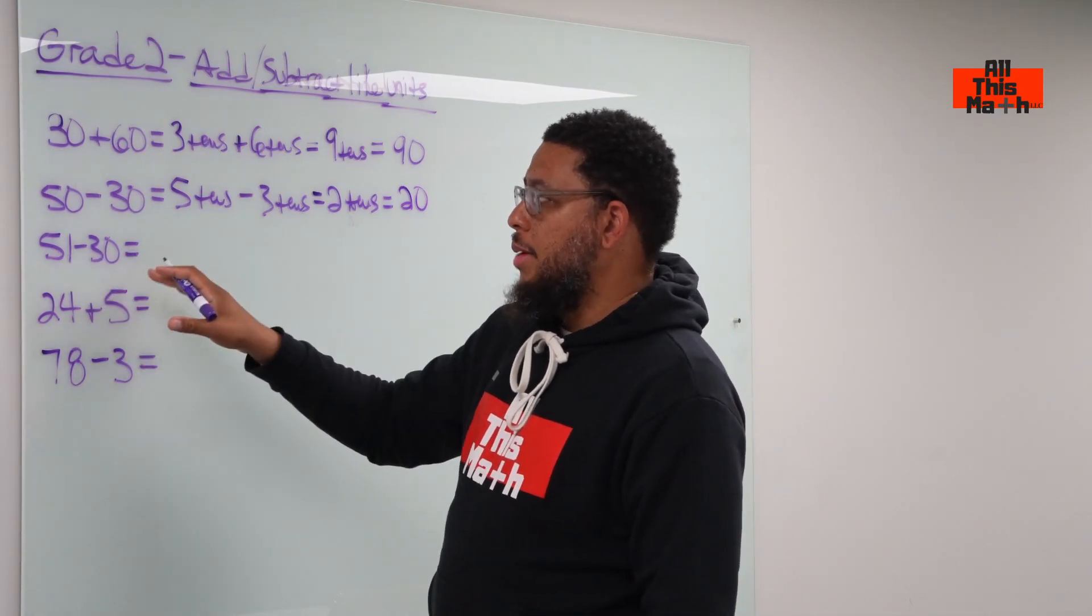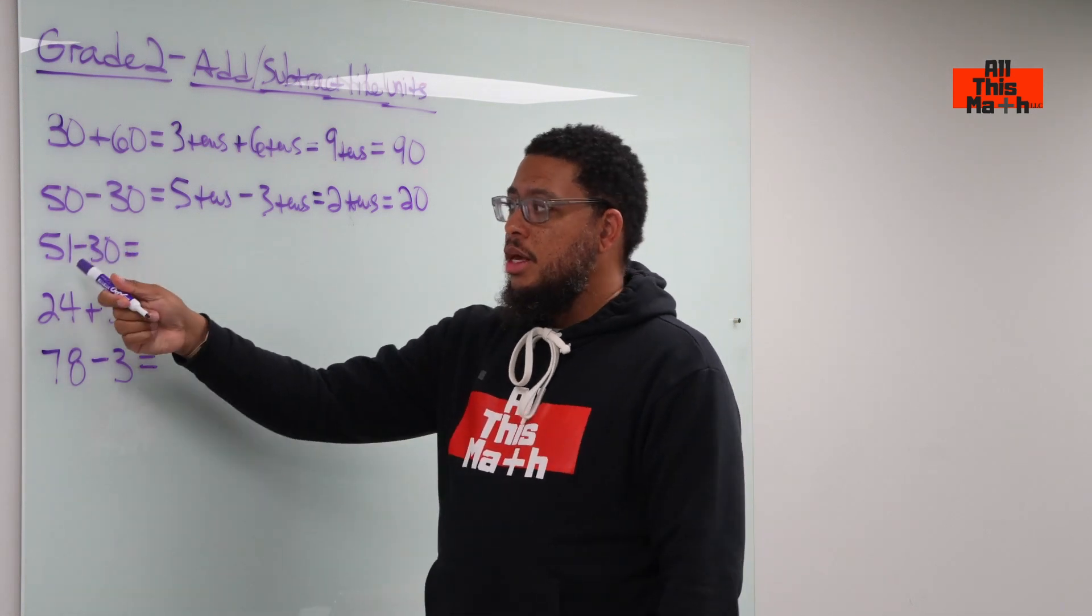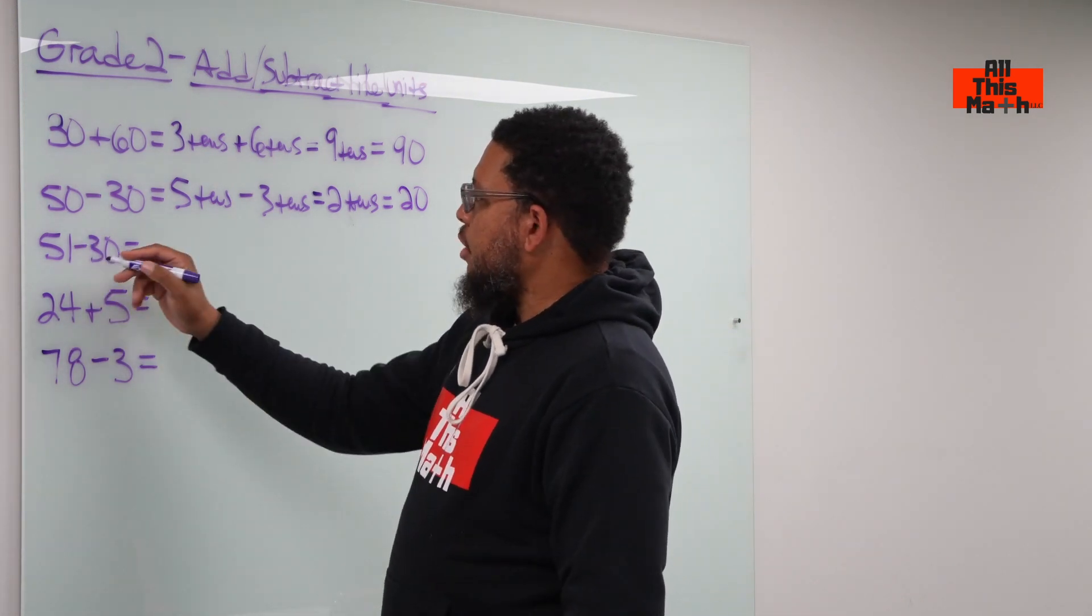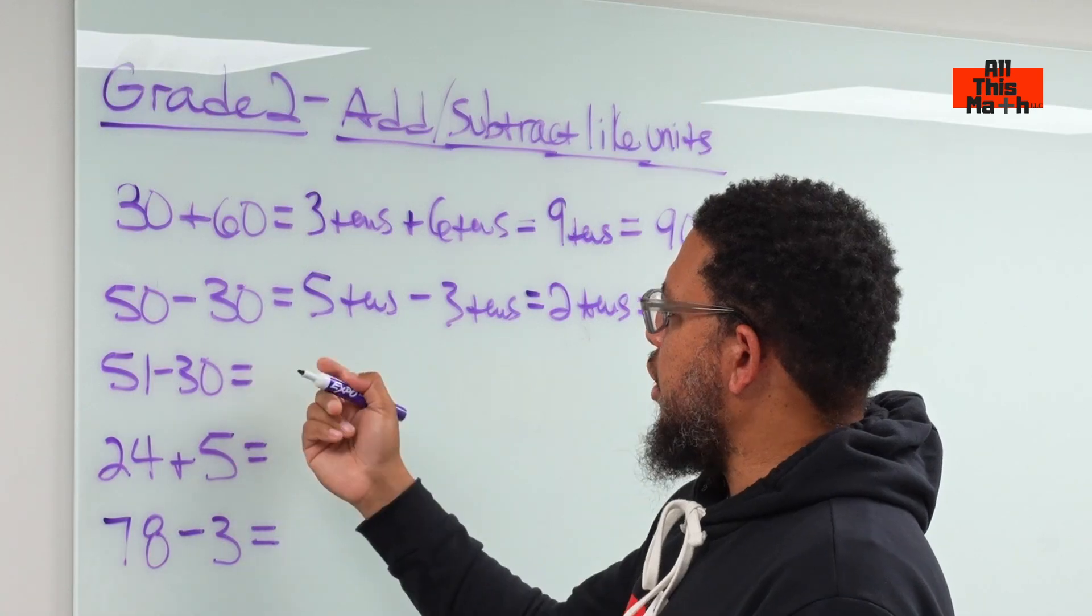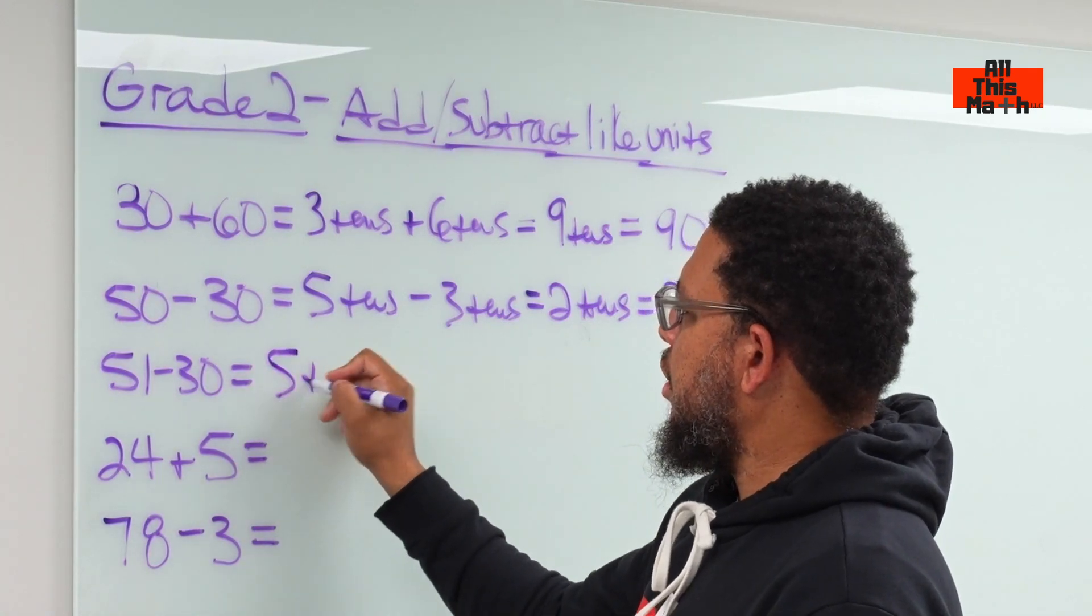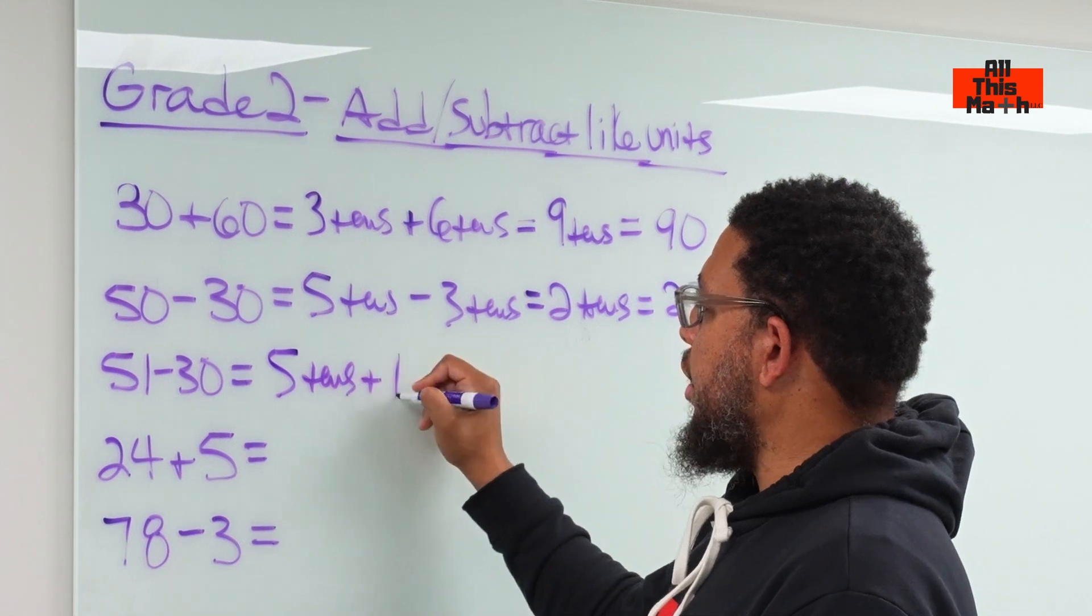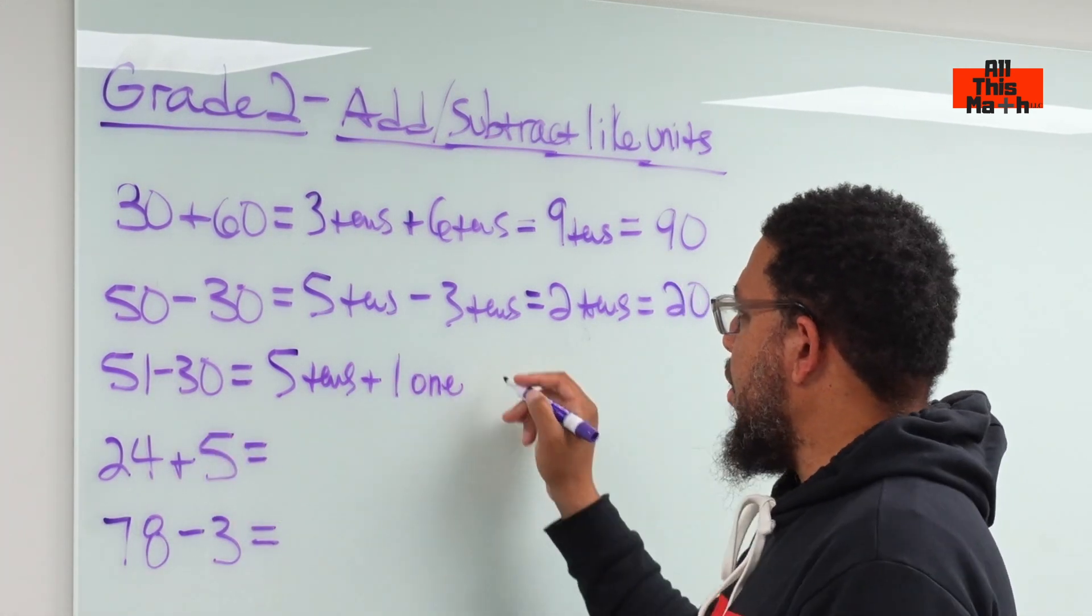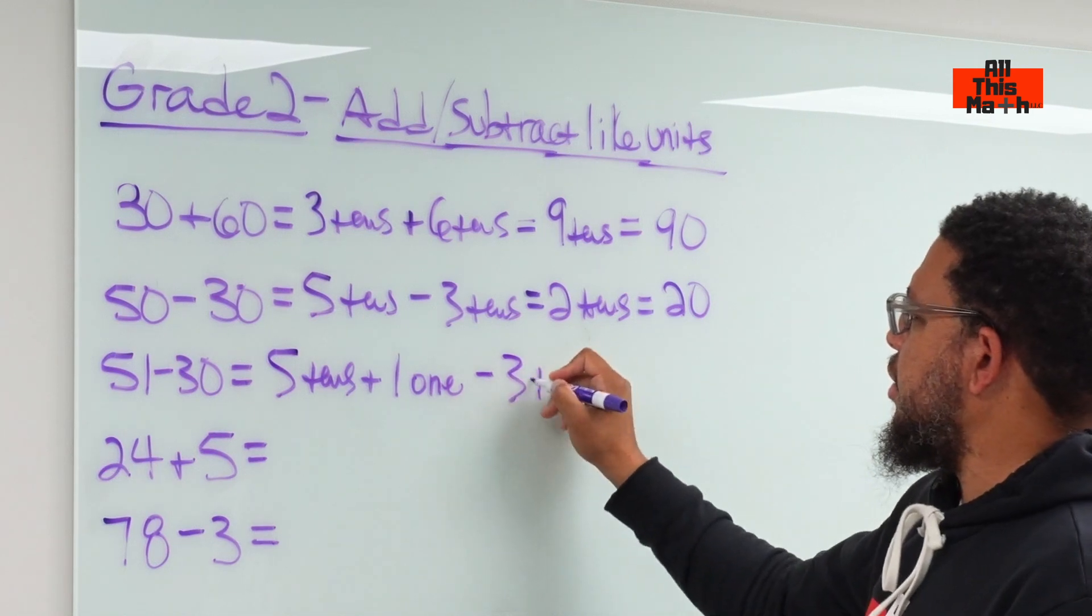Let me go to the next example, 51 minus 30. This one is different because in 51, we don't have a zero in the ones place. So how would we write this? We're going to write 51 as five tens plus one one. That's 51 minus three tens.